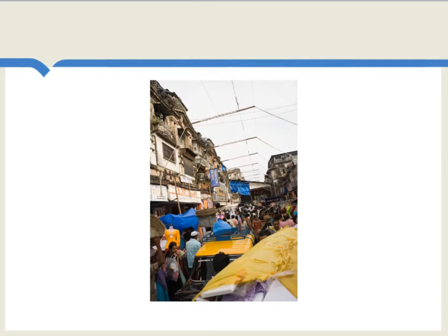One thing that did happen over this period is that Indian population went up. Population was estimated at about 142 million people in the year 1600, and by 1871 Indian population is estimated to be 256 million people. Keep in mind this is for what is called historic India, so it includes large parts of contemporary Pakistan and Bangladesh.